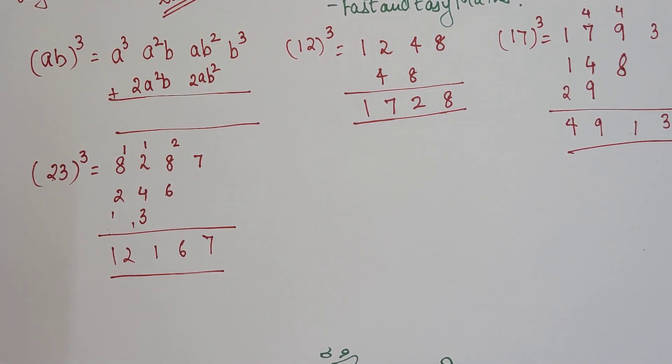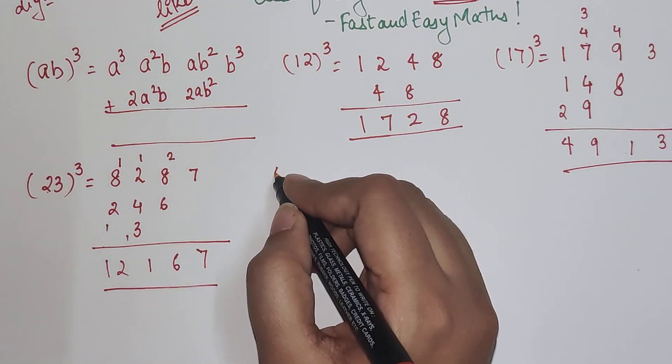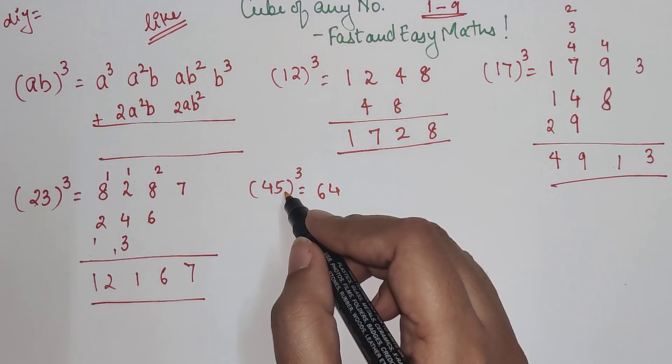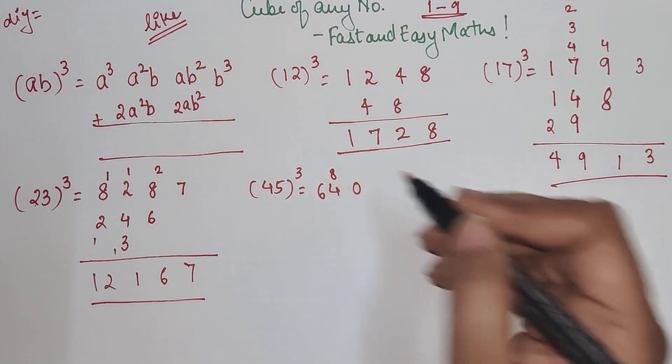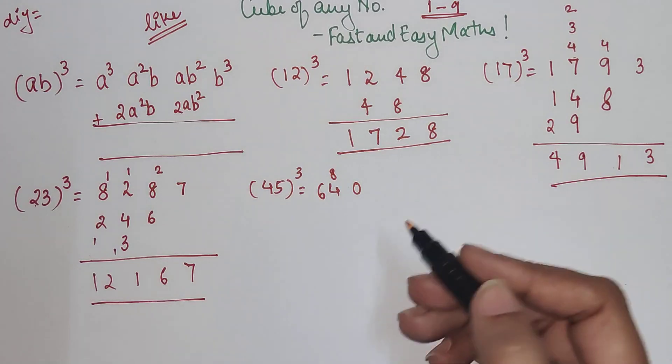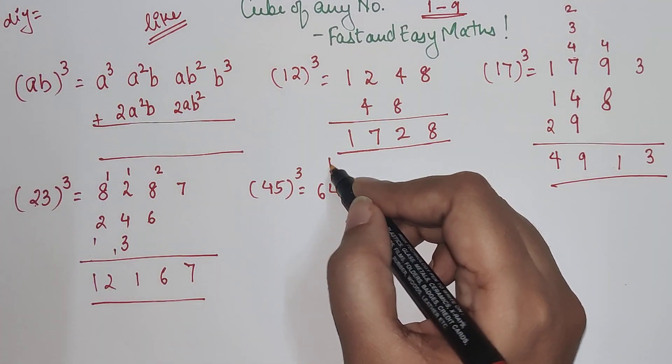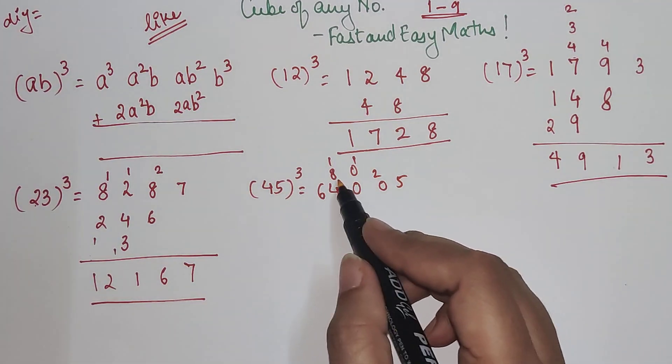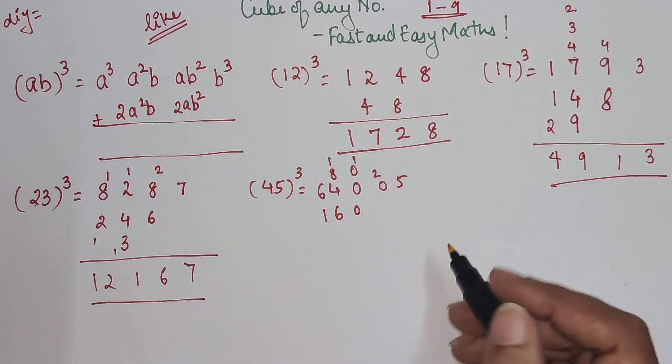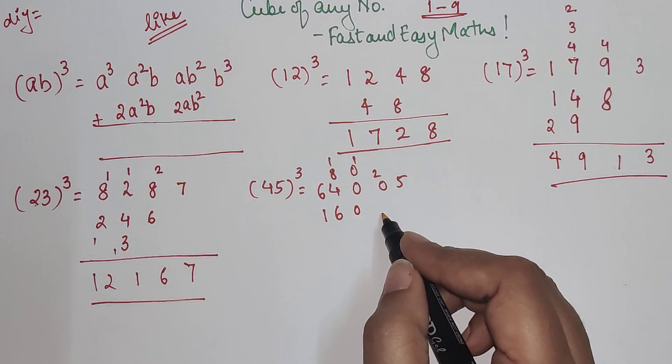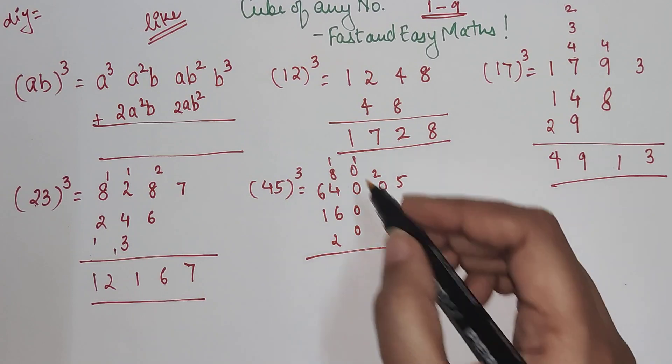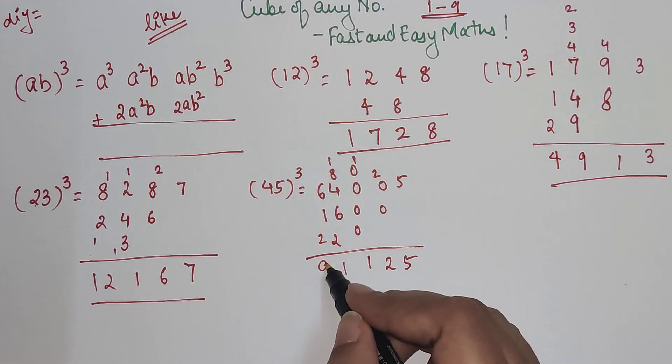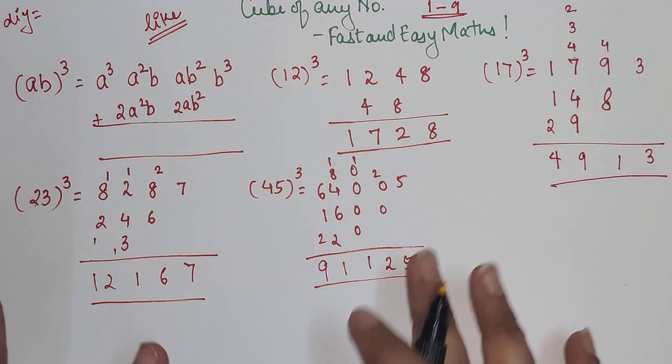I hope you all are getting the hang of doing these kind of problems. Now let's look at even a bigger number - we have 45³. 4³ is 64, then 4² × 5, so 16 × 5 is 80, we'll write 0 and 8 will be carried. Then 4 × 5² that is 4 × 25 that is 100, so we write 0. Then 5³ is 125. Now doubling 80 is 160 and doubling 100 is 200. So 2, 1, and 10, 20, 21, 2 carry - this is 91,125. I hope you are getting the hang of how to do these kind of tricks.